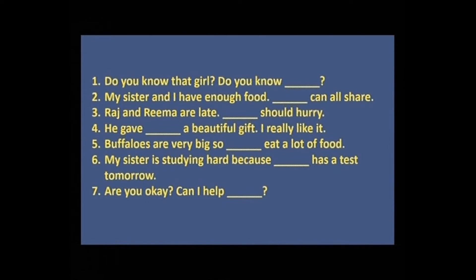Now let us do a pronoun activity. Fill in the blanks with the correct pronoun. First: Do you know that girl? — Do you know her? Second: My sister and I have enough food — we can all share. Third: Raj and Reema are late — they should hurry. Fourth: He gave me a beautiful gift. I really like it. Fifth: Buffaloes are very big so they eat a lot of food. Sixth: My sister is studying hard because she has a test tomorrow. Seventh: Are you okay? Can I help you?